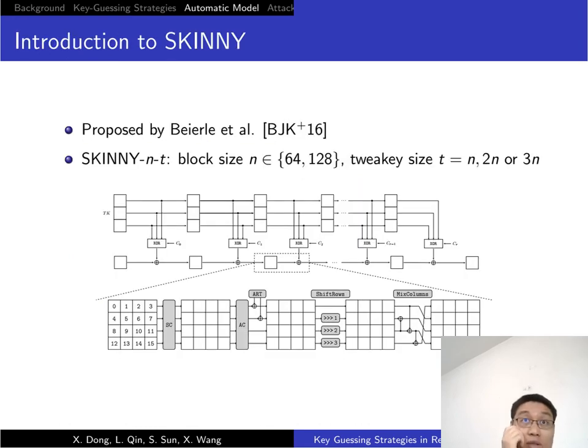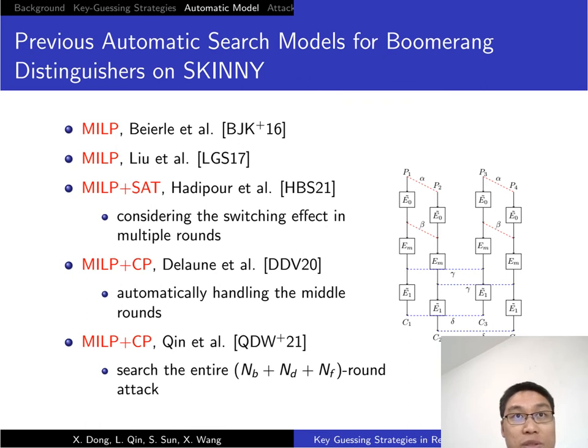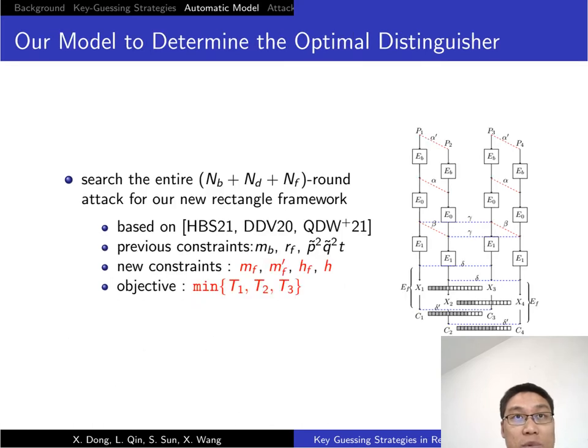First, we apply our model to cryptanalysis on Skinny. Skinny was proposed at Crypto 2016. Skinny adopts the Tweakable framework and SPN round function. We have a few automatic tools for differential or boomerang search. Two recent models combine MILP method and CP or SAT to determine a good boomerang distinguisher. They considered boomerang distinguisher and key recovery phase as a uniform automatic tool. Based on previous automatic tools, we build a new model to determine optimized configurations for our trade-off model.